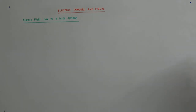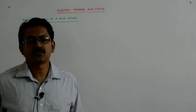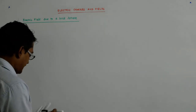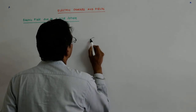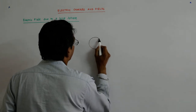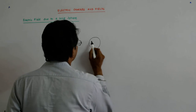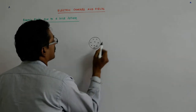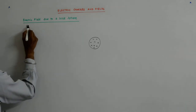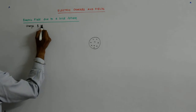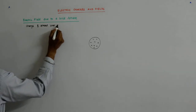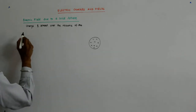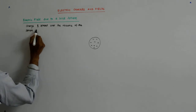Now we find the electric field due to a solid sphere which is uniformly charged. We have a solid sphere with a charge Q spread all over the volume — unlike a spherical shell, it is spread over the entire volume of the sphere of radius capital R.